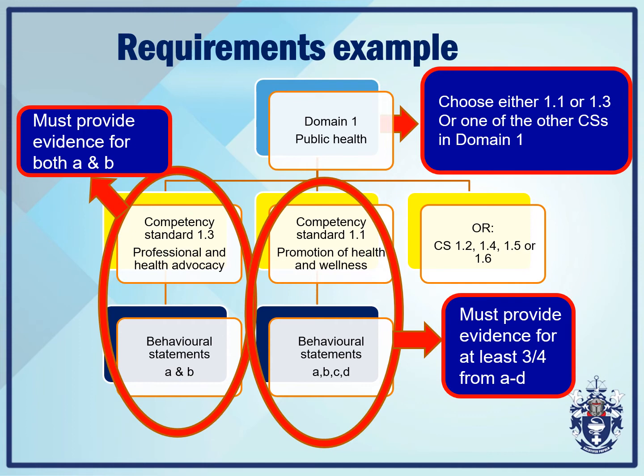Here is an example of what is required. For competency standard 1.3 — professional and health advocacy — we have behavioral statements A and B, so you must provide evidence for both A and B. In competency standard 1.1 — promotion of health and wellness — you have behavioral statements A, B, C, D. You need to provide evidence for three quarters of those four statements — three pieces of evidence, which equates to 75%.